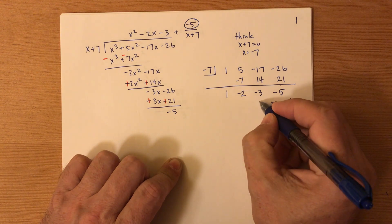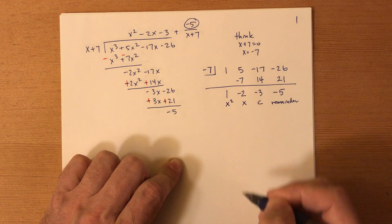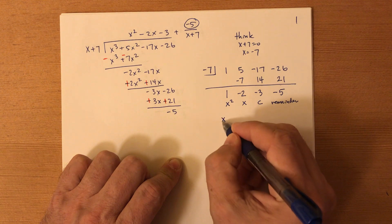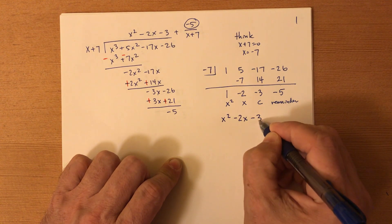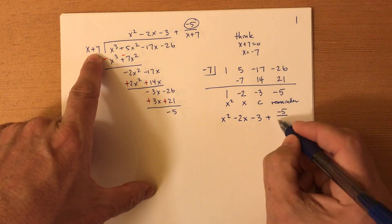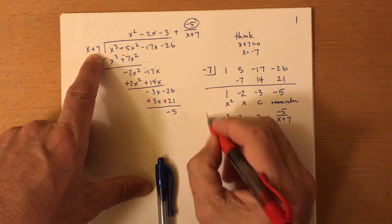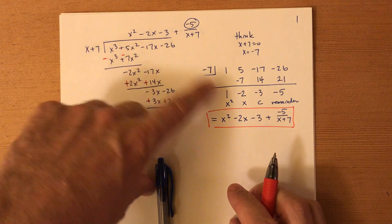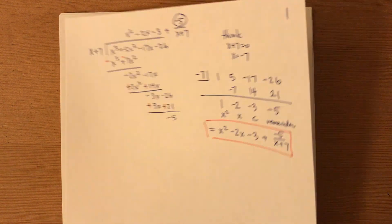You see that. Next, this is always your constant. This is always your x term. And this is always your x squared term. So believe it or not, check this out. You get x squared minus two x minus three, plus negative five. And then what was my divisor? x plus seven. Check this out. Isn't this the same answer we got? And we didn't have to do long division. That is cool. Okay, so let's go to the next problem.